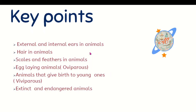These are some key points of this chapter: external and internal ears in animals, hair in animals, scales and feathers in animals, egg-laying animals (oviparous), animals that give birth to young ones (viviparous), and the last is extinct and endangered animals.